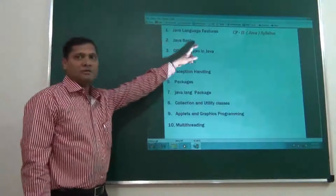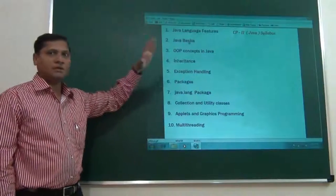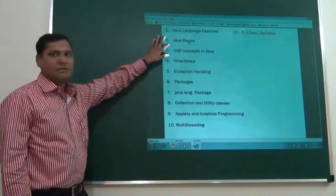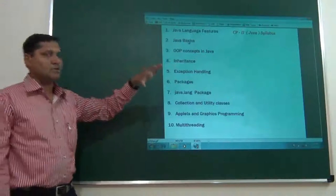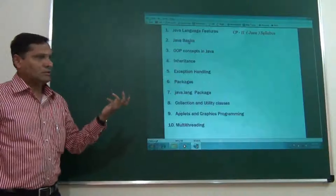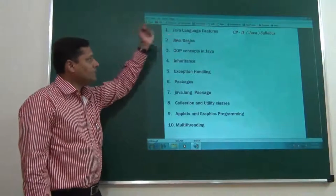The topics we will be studying for CP2 is, first is Java language features. That is overall what Java is all about, what are different features, what are things present in Java, what we will be learning. Then we will be learning Java basics as a language, what Java consists of, like operators, variables, how to write arrays, how to use 2D arrays, how to use classes, objects, very basic concepts of classes and objects we will be studying here.